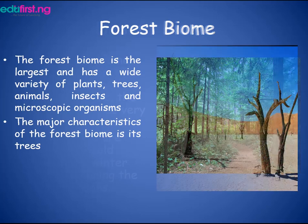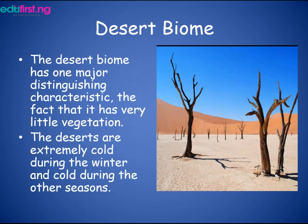The next type of biome is the desert biome. The desert biome has one major distinguishing characteristic — it has very little vegetation. Compared to the forest biome, they are like complete opposites: the forest biome has a lot of vegetation, but that is not so for the desert biome.